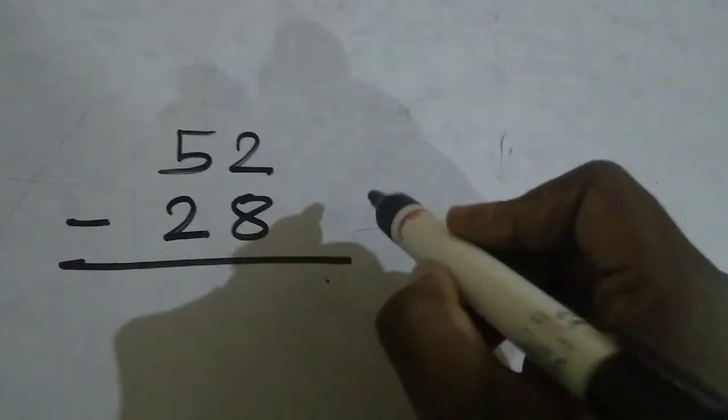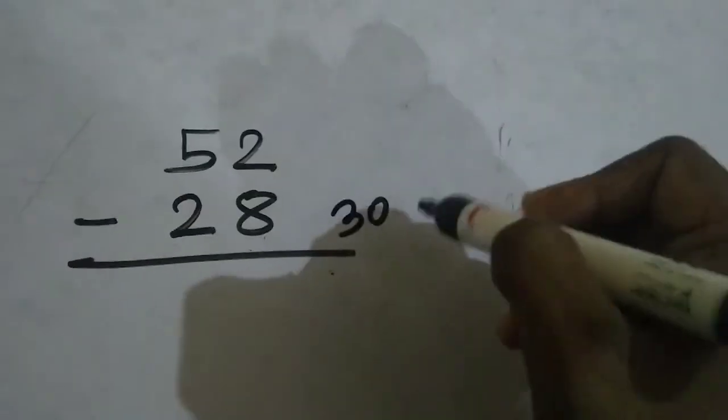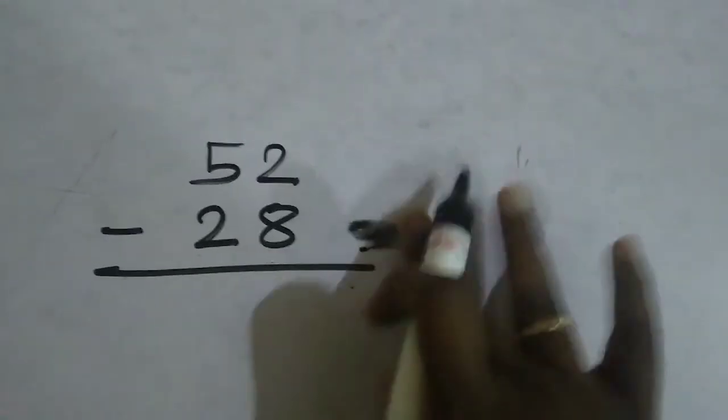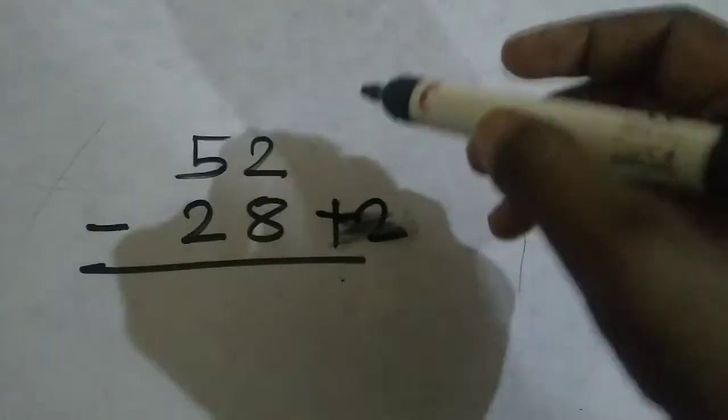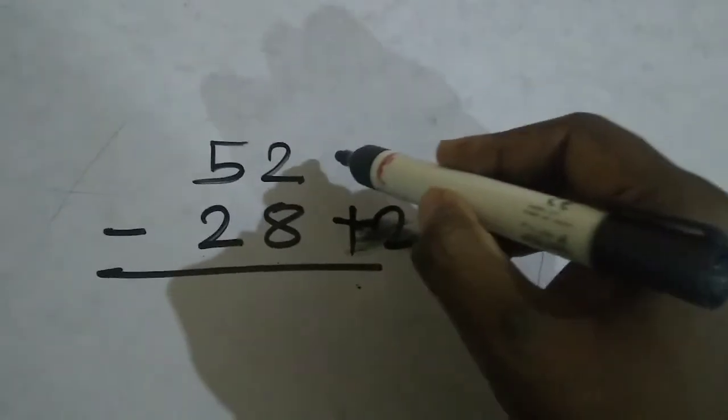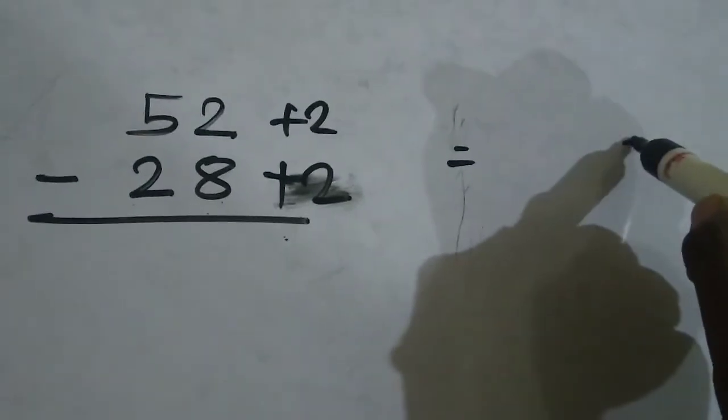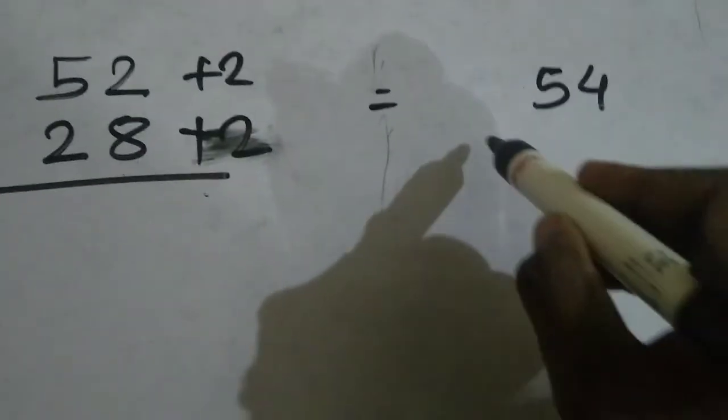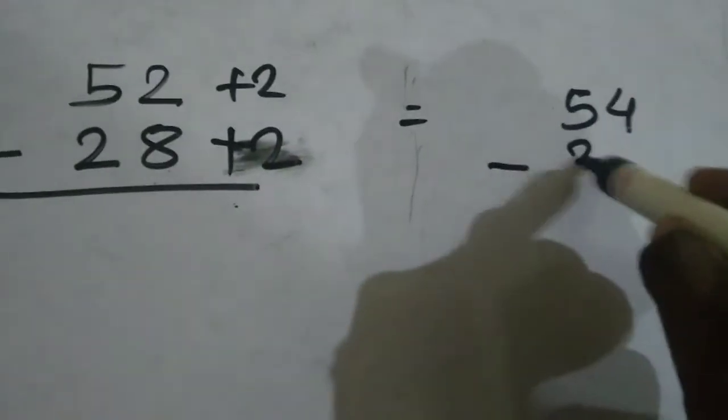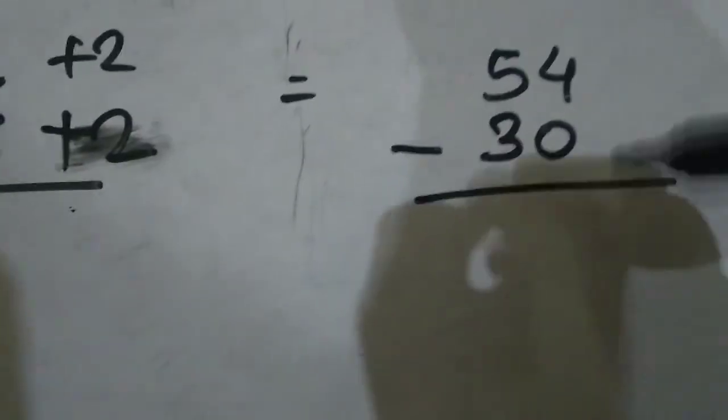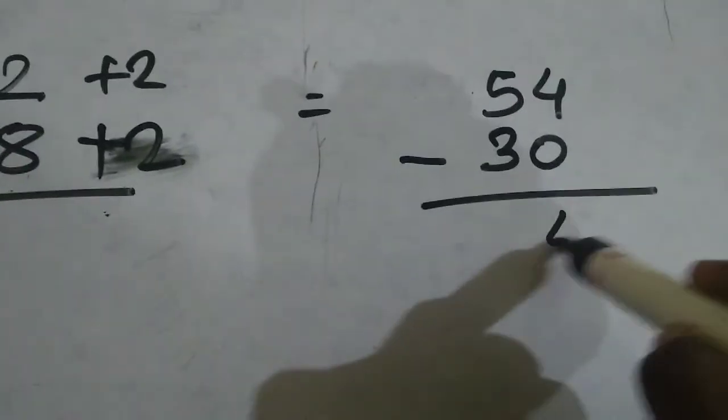Here 52 minus 28, just make 28 to 30. To make it 30 we have to add plus 2 here, right? Then it will become 30. And here also we have to add 2. Then what it will become? It will become 52 plus 2 is 54 and minus 28 plus 2 is 30.